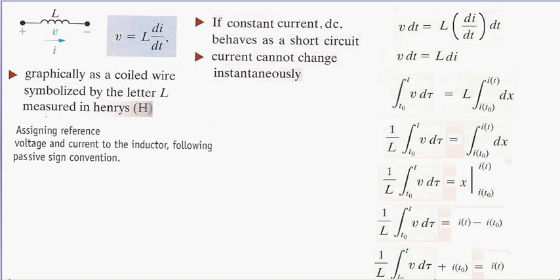In inductors, we symbolize an inductor as a coil of wire, by the letter L, and it's measured in Henrys. Using our passive sign convention, the current through an inductor goes from plus to minus, as does the voltage from plus to minus. That's how we use our passive sign convention.